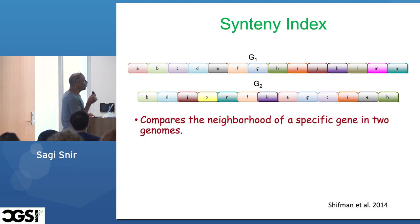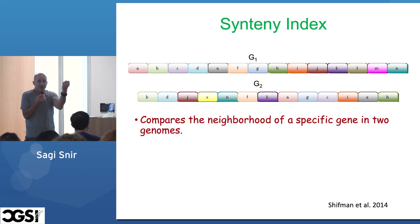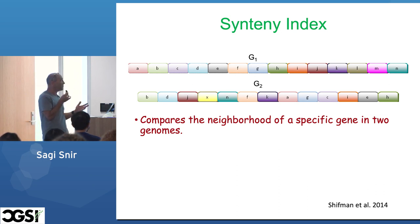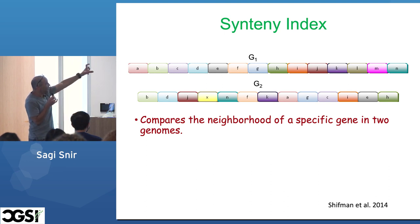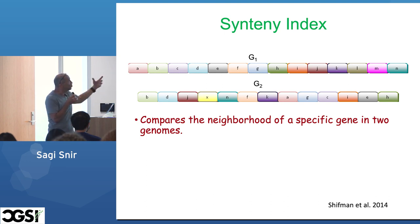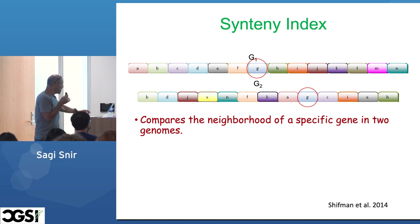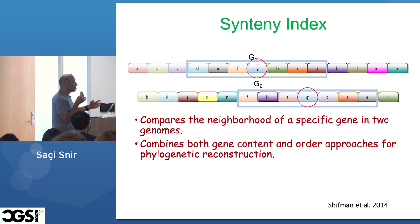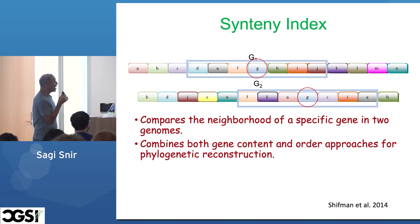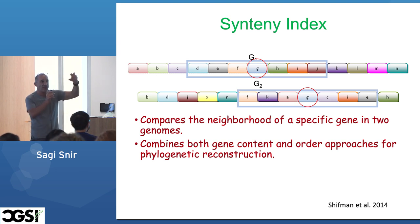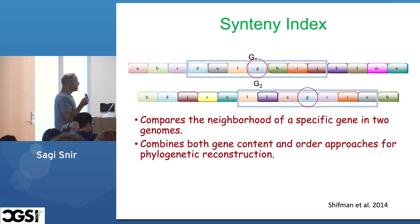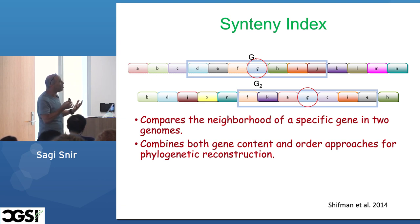The Synteny index compares the neighborhood of one specific gene in two genomes. Gene G is some specific gene — for instance, RecA or hemoglobin or whatever — and it exists in two genomes. We define the neighborhood around gene G and compare that neighborhood in terms of the identity of shared genes. It combines both gene content — the shared genes — and gene order, because G defines the order. This is the novelty of the Synteny index.